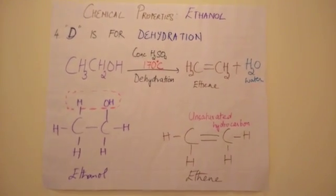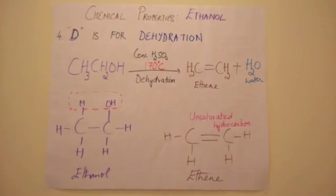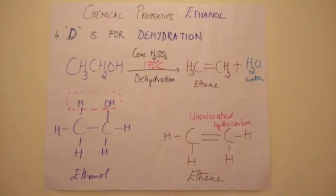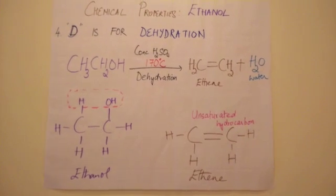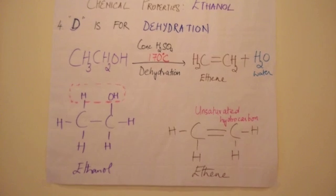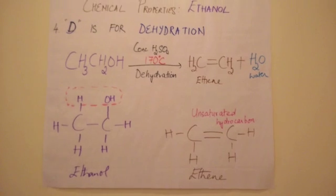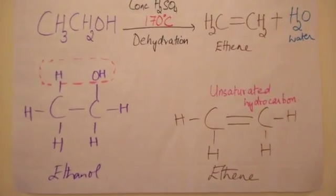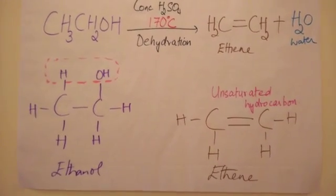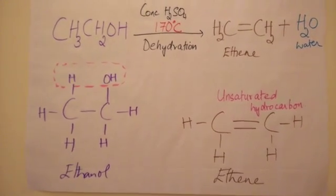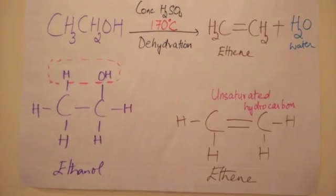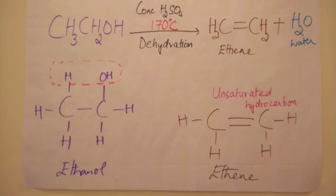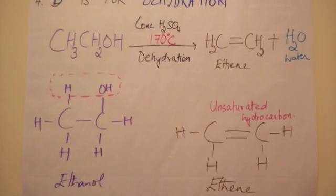The fourth reaction: D is for dehydration. Ethanol — CH3CH2OH — with concentrated sulfuric acid acting as the dehydrating agent, heated to 170 degrees centigrade. You get an unsaturated hydrocarbon. Structurally, the H and the OH are removed as a water molecule, and the carbon then bonds to itself — like Lego needing four links — forming ethene, the unsaturated hydrocarbon produced in this dehydration reaction.